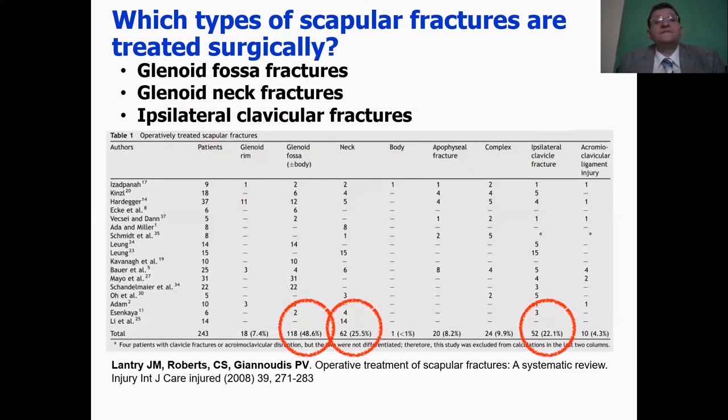In a systematic review, it was found that the most common causes of surgical intervention was glenoid fossa fracture, neck fractures, or ipsilateral clavicular fractures.